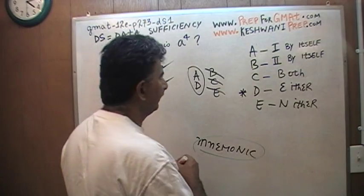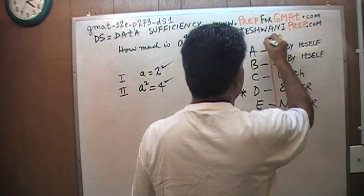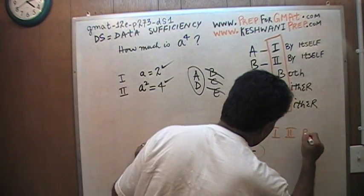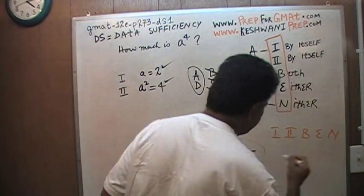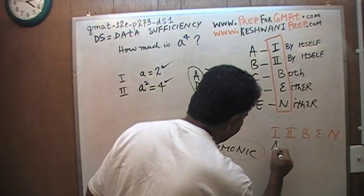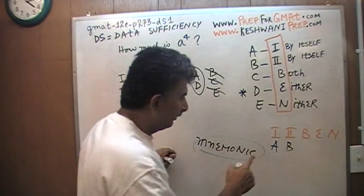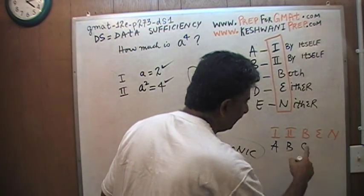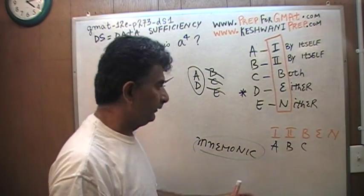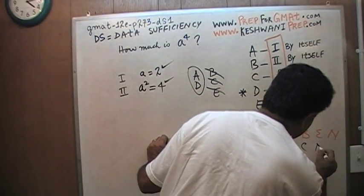The mnemonic we come up with is: one, two, bend. One, two, bend. If statement one by itself is enough, the answer is A. If statement two by itself is enough, the answer is B. If you need both, the answer is C — B for both. If either of them is enough by itself, then the answer is D — either.